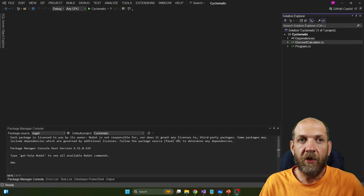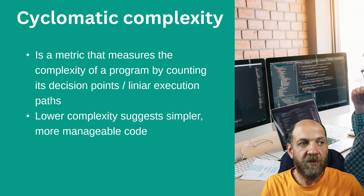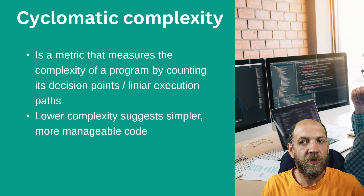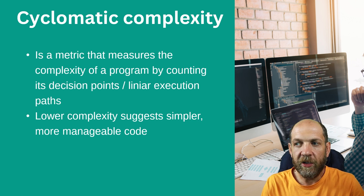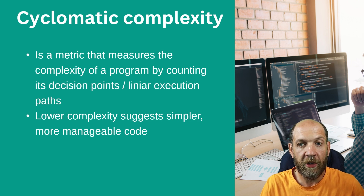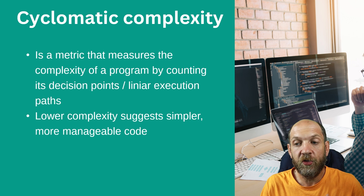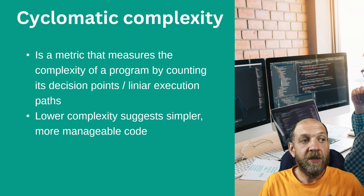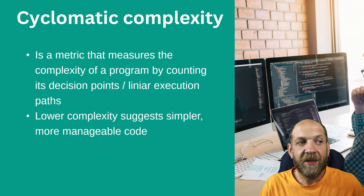Before we go into code, let's understand what cyclomatic complexity is. At its core, cyclomatic complexity is a metric that measures the complexity of a program by counting the decision points or the linear execution paths. The lower the complexity of a program, the simpler that program is, and therefore it's easier to manage and maintain. Think about a program as a huge number of decisions that the computer needs to take.